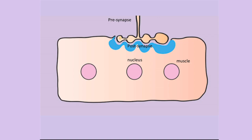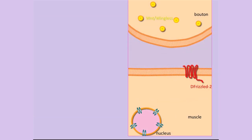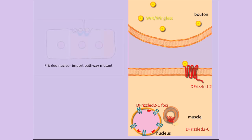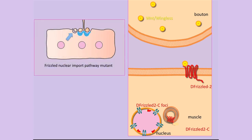An important signal in this process is provided by the secretion of Wingless, a Wnt ligand. Wingless is secreted by the presynaptic cell and binds to the postsynaptic Frizzle receptor. The receptor itself is endocytosed and travels towards the nucleus. In the vicinity of the nucleus, a terminal fragment of the receptor is cleaved and it enters the nucleus, where it forms very prominent foci — the Frizzle 2 foci — that localize to the periphery of the nucleus. Because mutations that affect the Frizzle nuclear import pathway produce synapses lacking postsynaptic specialization, we thought this process had something to do with gene expression required to synthesize the postsynaptic apparatus.